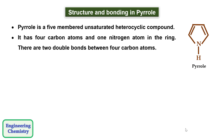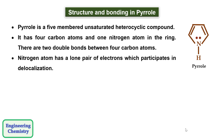There are two double bonds between the four carbon atoms. In addition to that, the nitrogen atom has a lone pair of electrons which participates in delocalization. Delocalization means the electrons — including the lone pair and the pi electrons — can revolve around the whole structure. This gives Pyrrole its aromatic character.